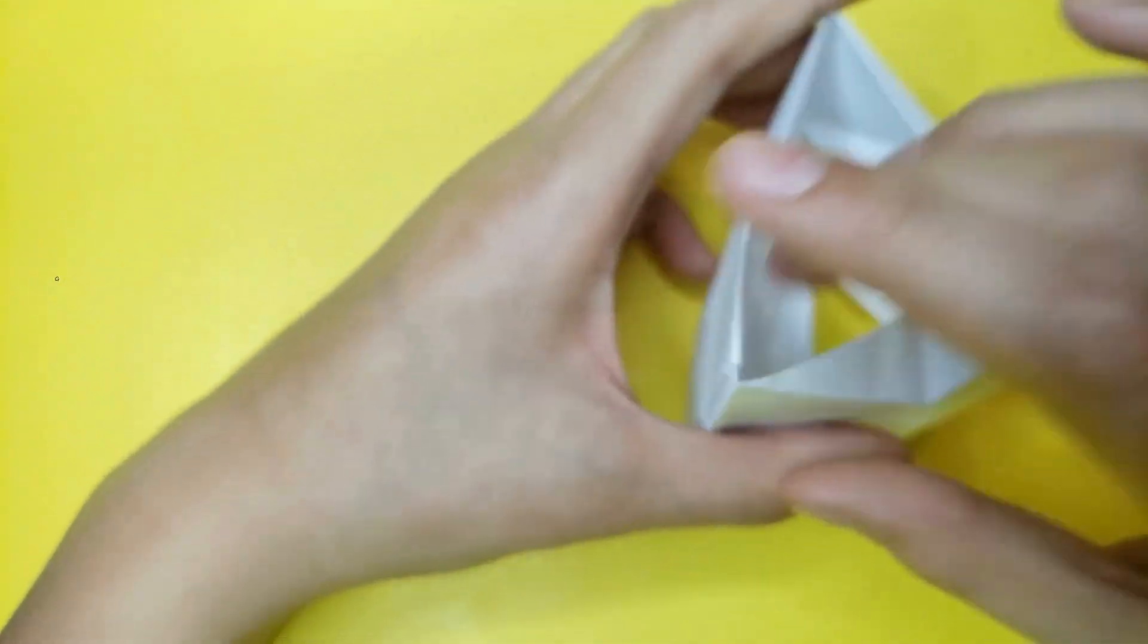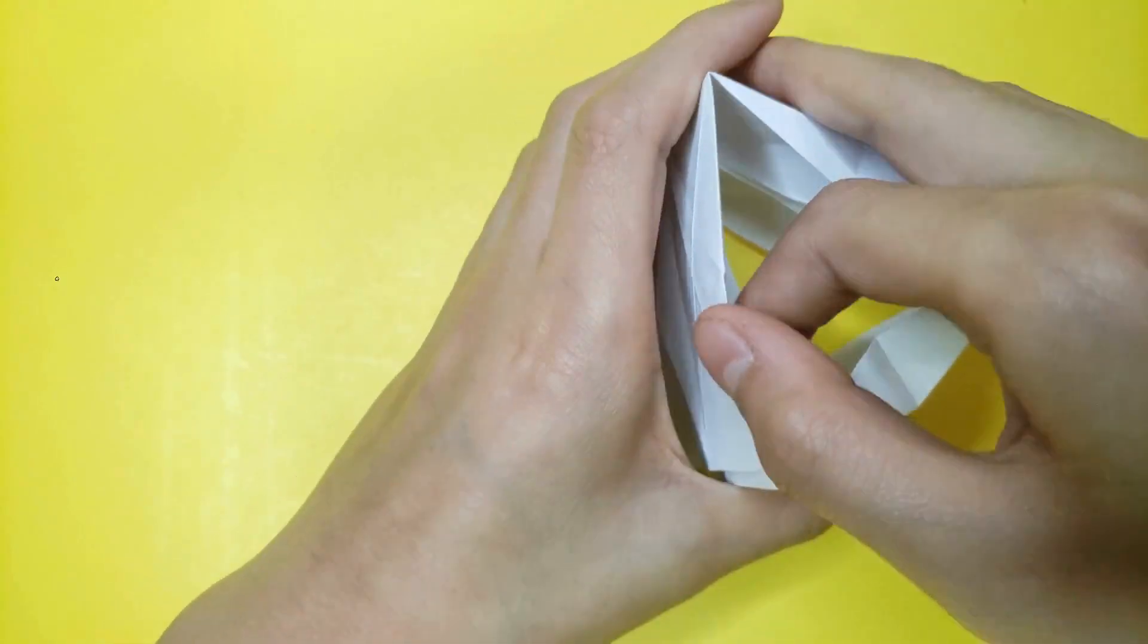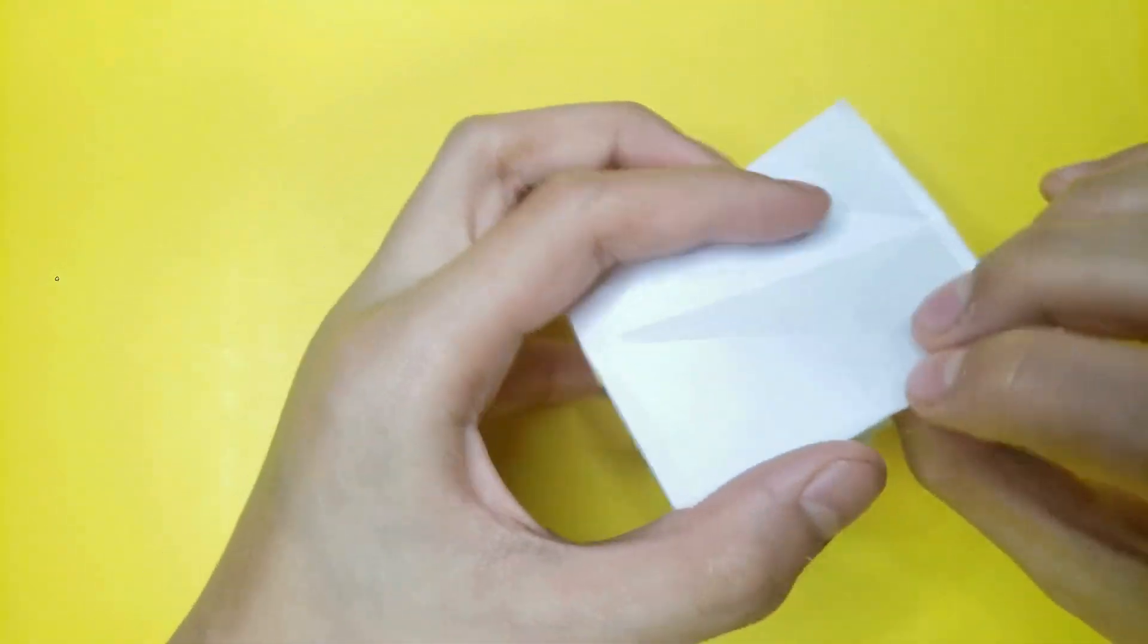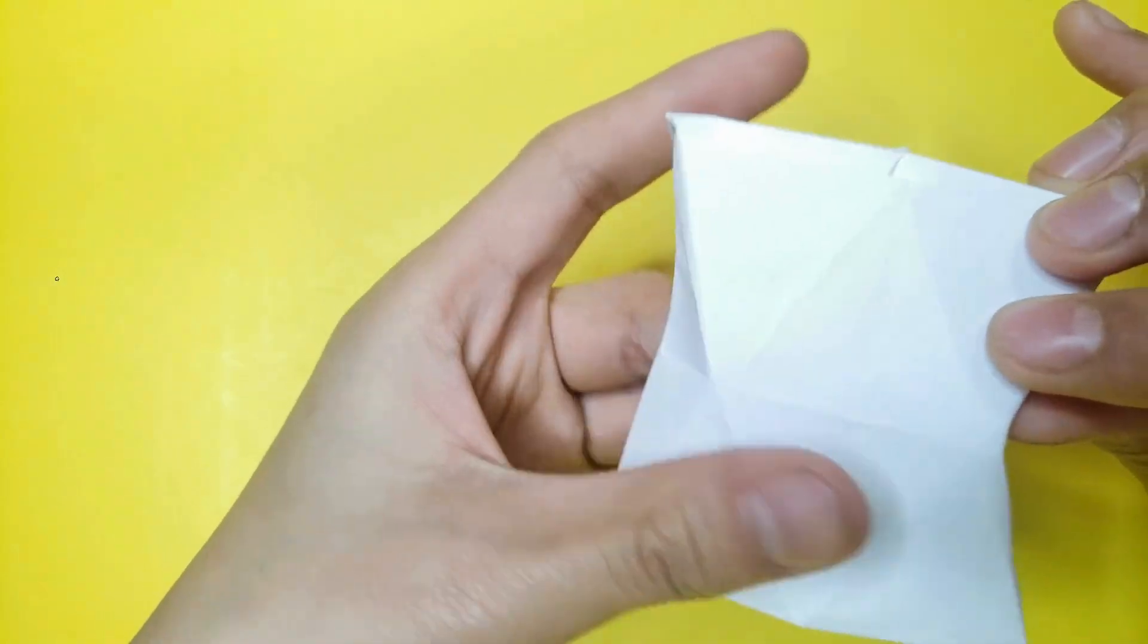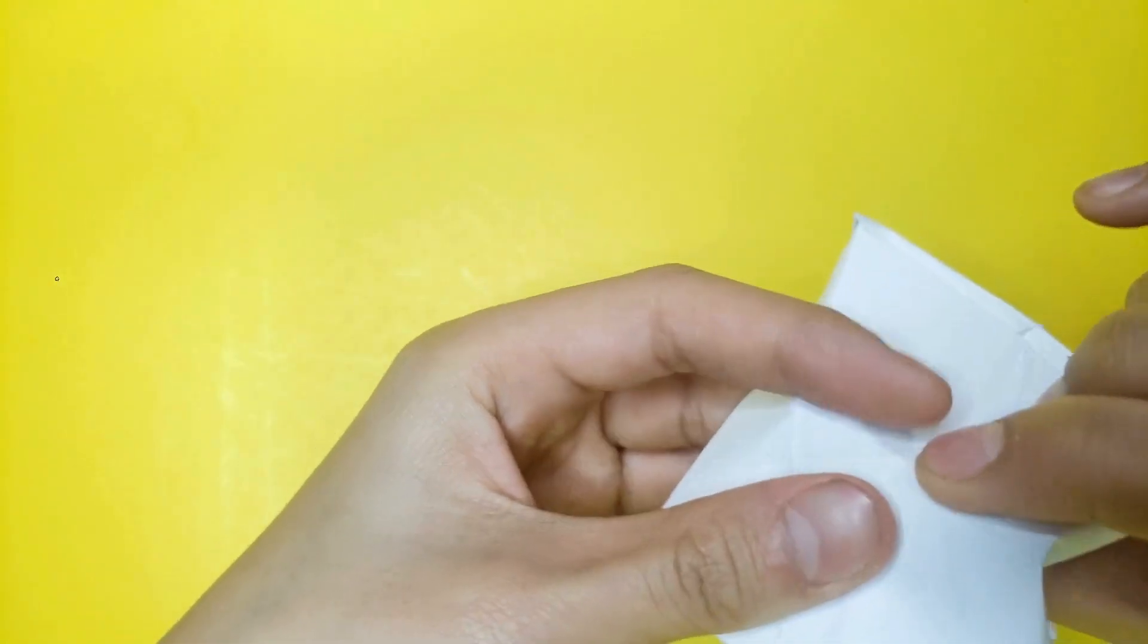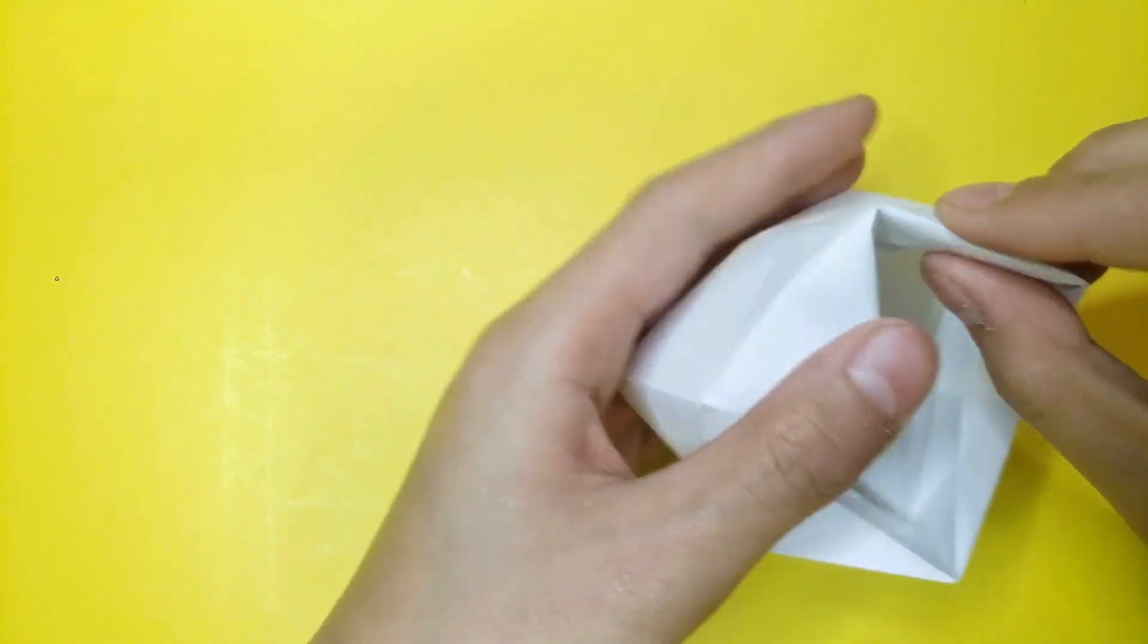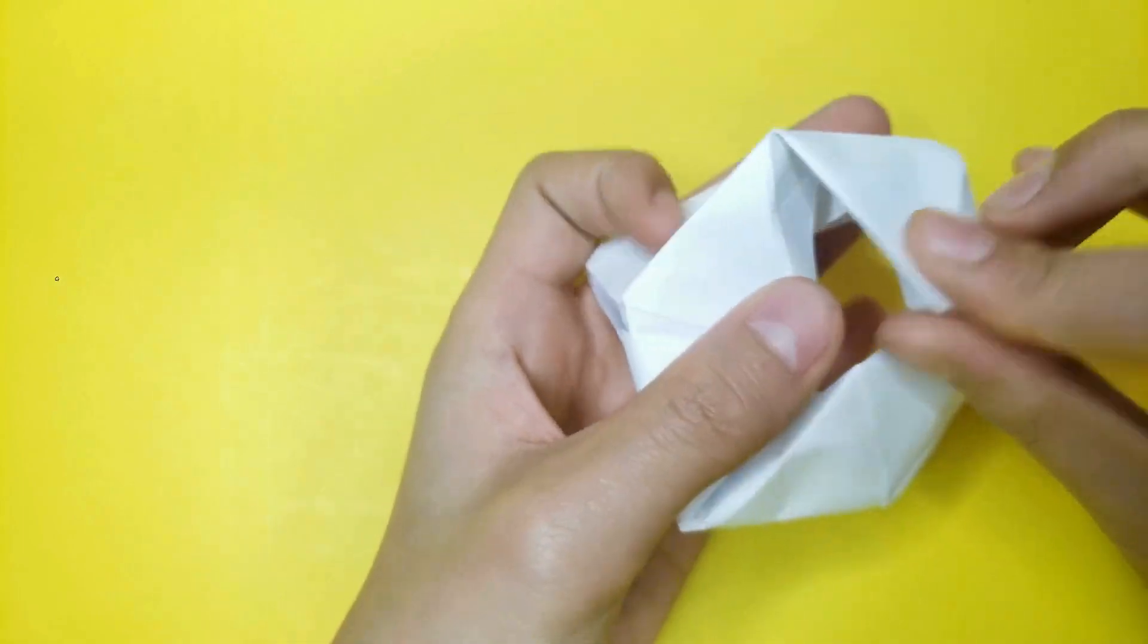Once you've turned that into a triangle, you're going to fold on all the creases. And you're going to fold on every piece.